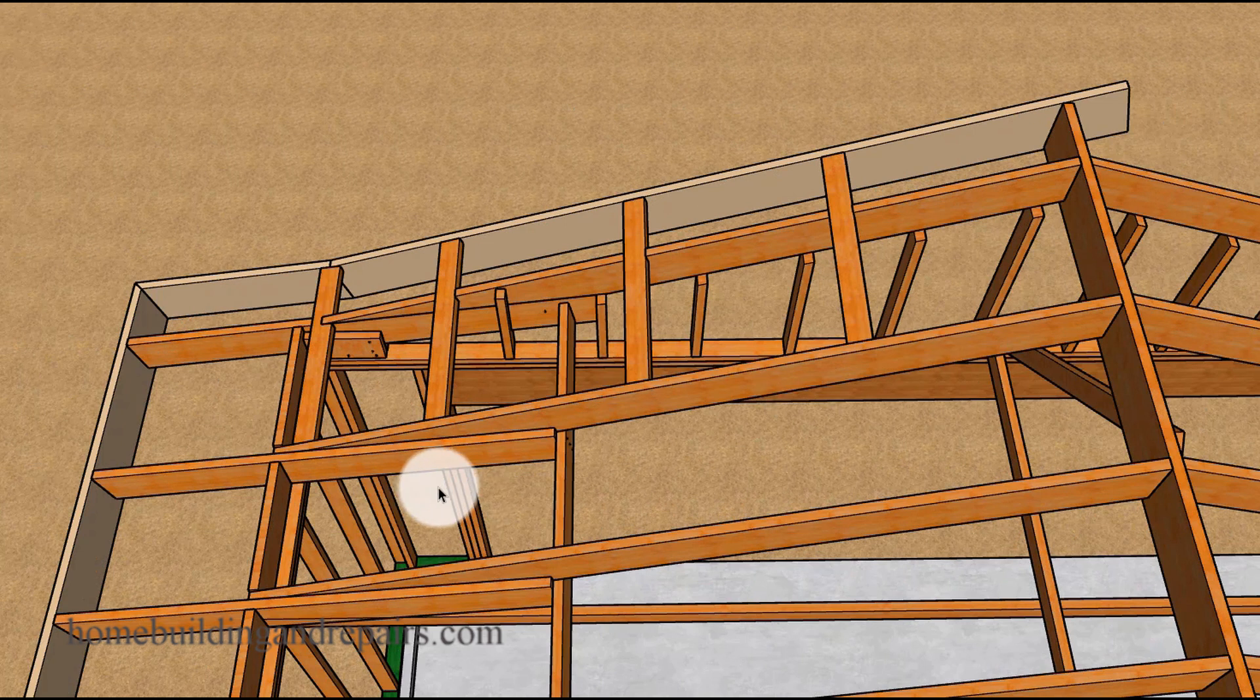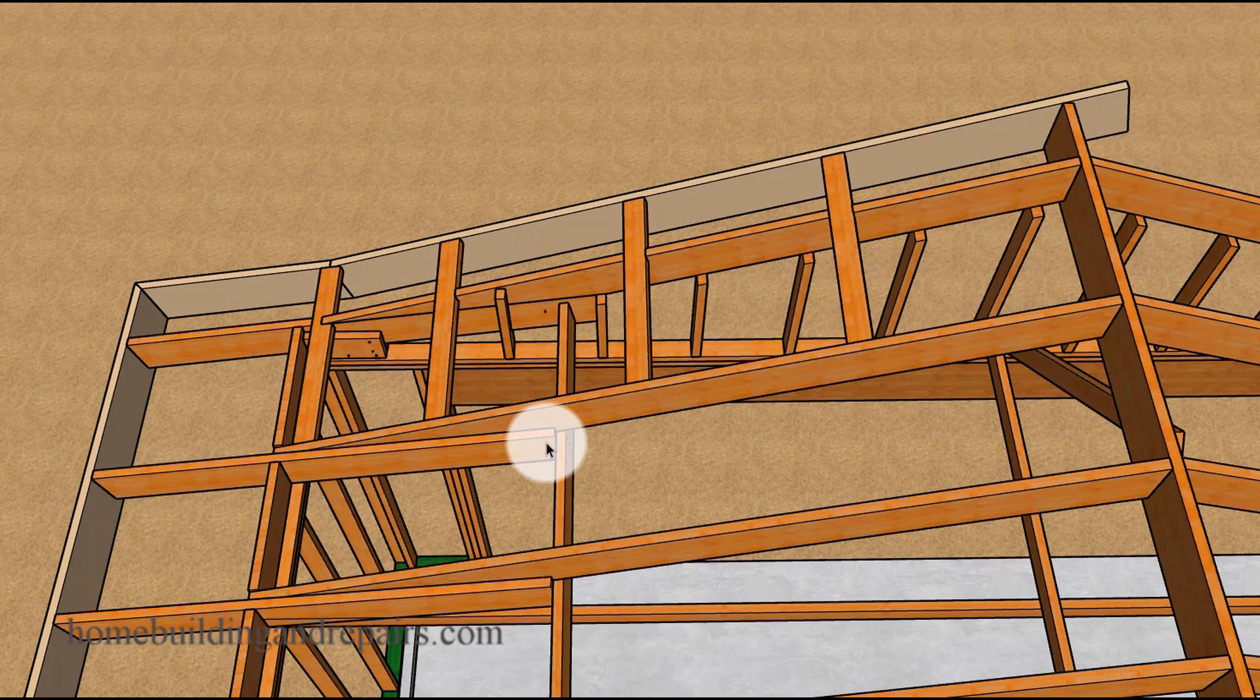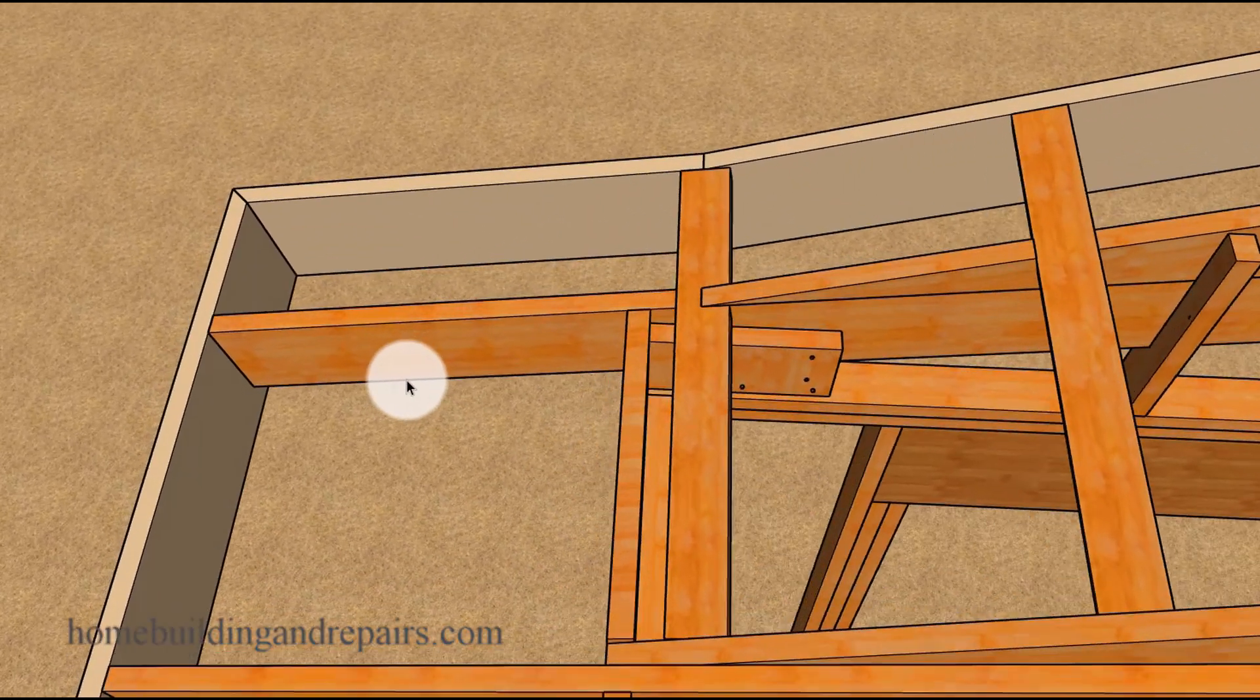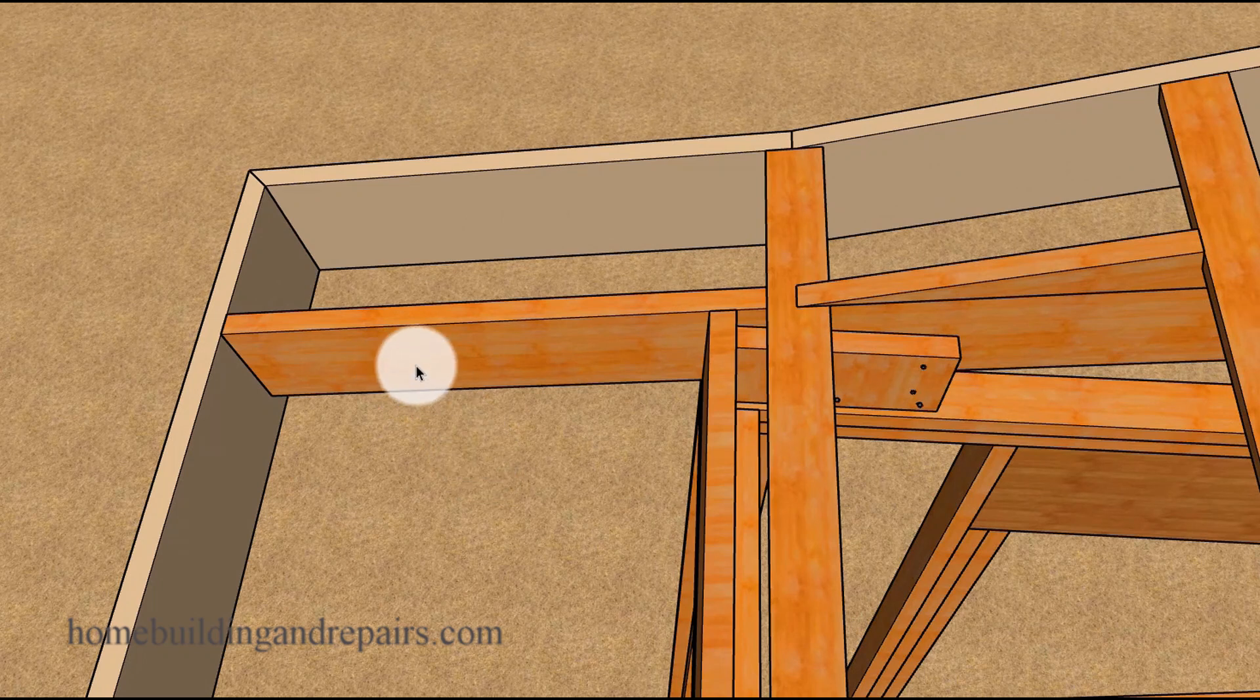In our second example we're going to use 6 foot long 2x8s but we're not going to shape them. The reason for that will be to have an exposed overhang from the bottom, or something that's going to look a little nicer from the bottom.